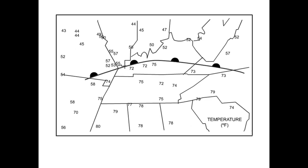Here's an example of a warm front. You would normally see this as a red solid line with semicircles. I'm showing temperatures in degrees Fahrenheit — you'll notice how they change across the front. You have low 50s north of the warm front, but south of the warm front over Tennessee we've got temperatures in the 70s, and upper 70s to near 80 degrees across the deep south. So when the warm front moves through, you're going to notice a wind shift that results in much warmer air advancing northward.